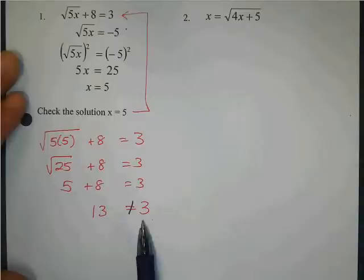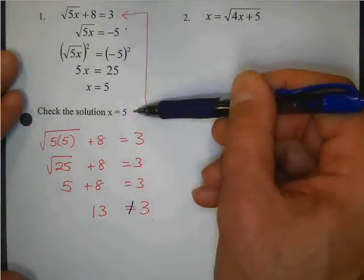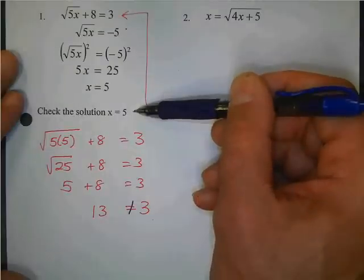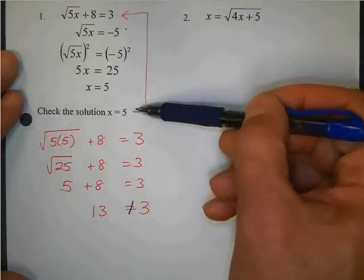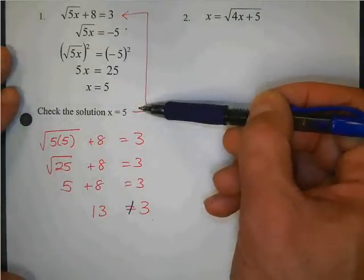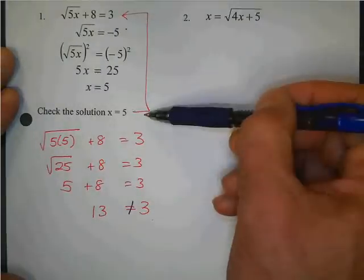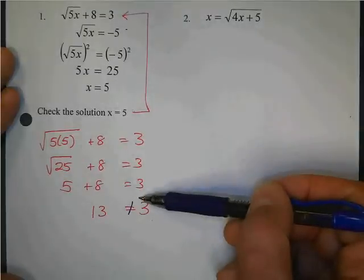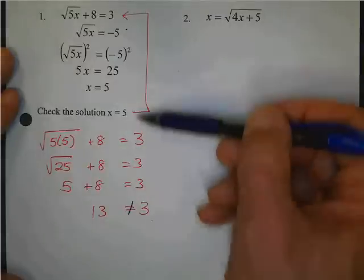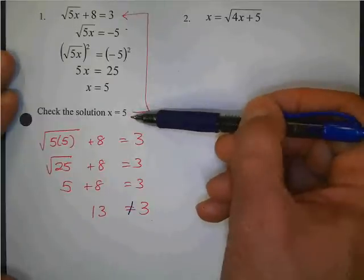Now, obviously it doesn't work. What does that mean about our answer? What's that, Sophia? It's not right. That's correct. Our answer is not right. Now, but, did we do the steps correctly to get to our answer? Stay with me here, Max. Did we do our steps correctly? Was all of these things right to get from here to there? Yeah. But our answer still didn't work. So, if the answer that we got correctly doesn't work, what we do is we throw it out.